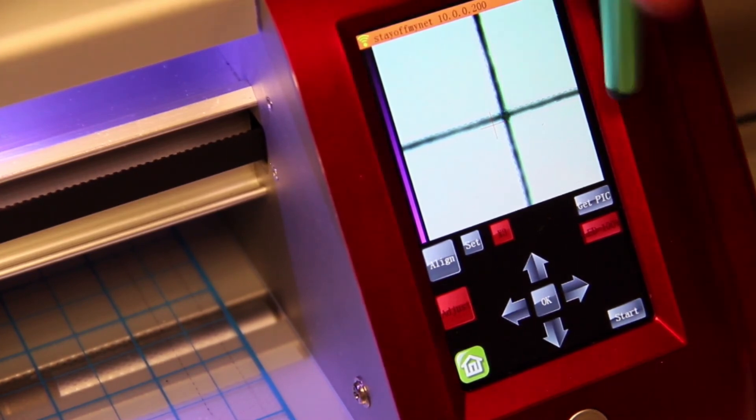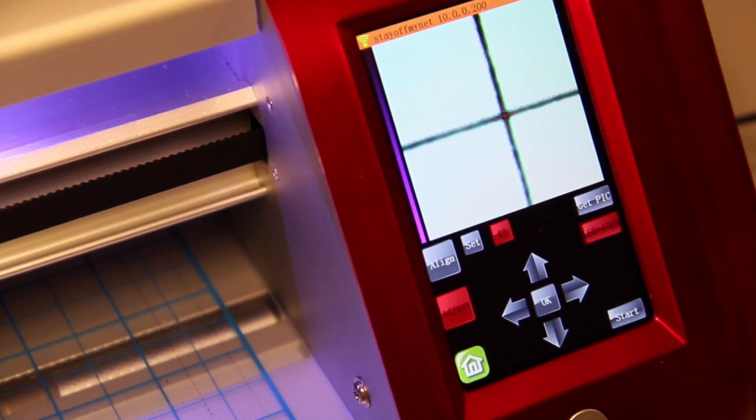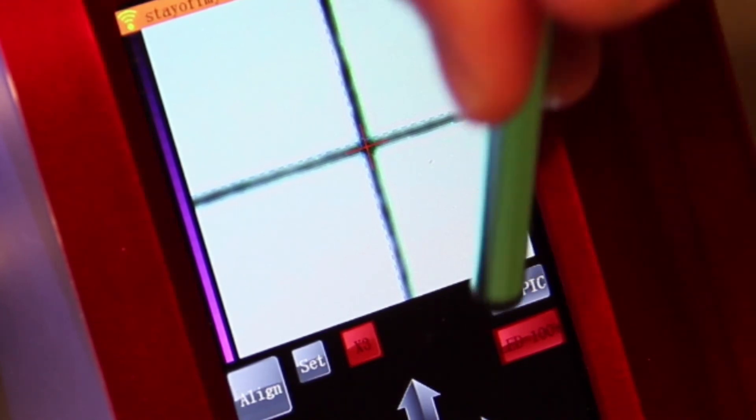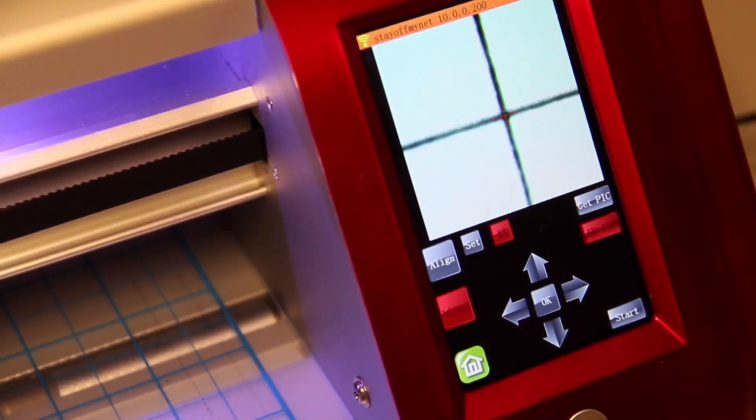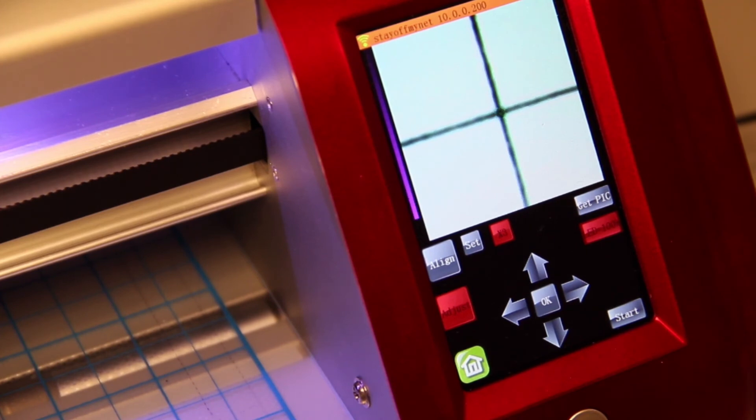So anyways, I'm going to go ahead and make one more adjustment. You can sort of see I got the red crosshair exactly in the center. Again, I'm going to click on the OK button. It will do another scan. And I think that we should be good on this one.